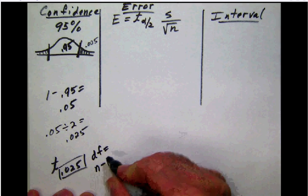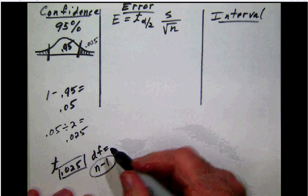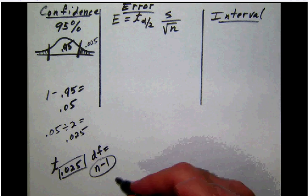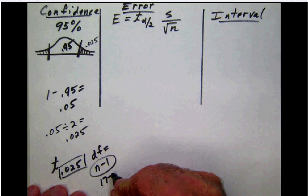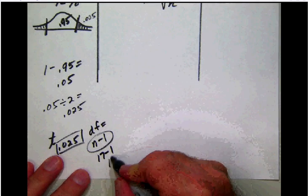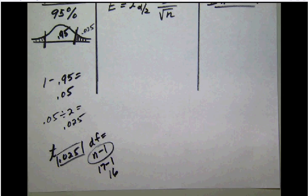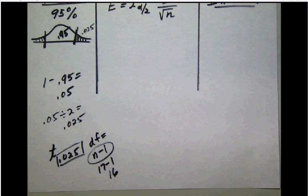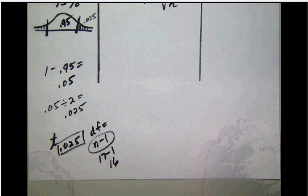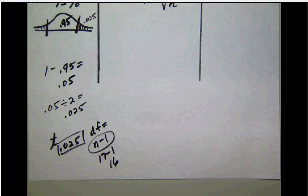Degrees of freedom n minus one, in this case that would be 17 minus one or 16. And we'll have to watch that on t distributions and remember then that that degree of freedom is always your sample size minus one. So let's go back and calculate that.